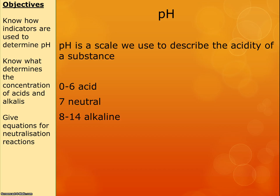pH is a really important term we need to know. It's a scale that lets us put a number to how acidic something is. If we give it a number 0 to 6, it's an acid, and the lower the number the more acidic it is. If we give it a 7, it's neutral — neither acid nor alkaline. And if we give it 8 to 14, it's alkaline; the higher the number, the more alkaline or basic it is.